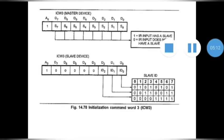A bit is set to 0 if the interrupt request input does not have a slave. Now in slave mode, this format is used for storing the slave ID. As usual, the last bit A0 is set to 1 to indicate you are using the initialization command word. The bits D0, D1, and D2, called LSP, are used as the ID for slave mode. The remaining bits from D3 to D7 are set to 0 — these are predefined bits that cannot be changed.